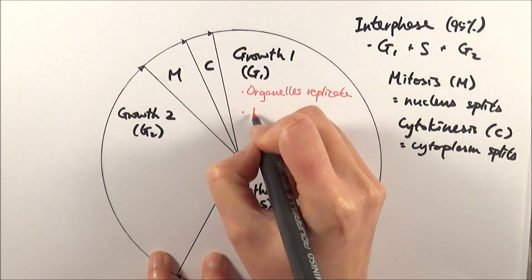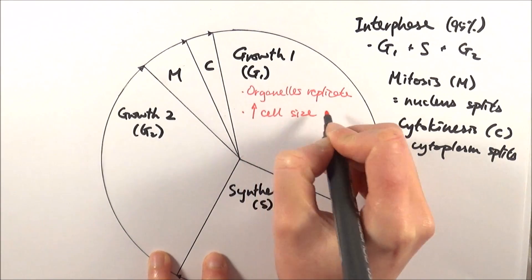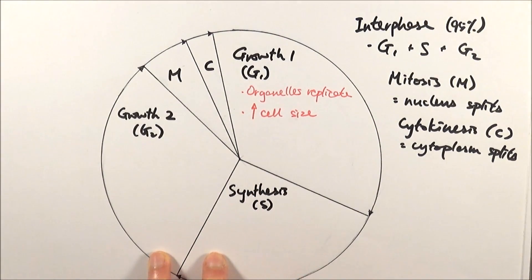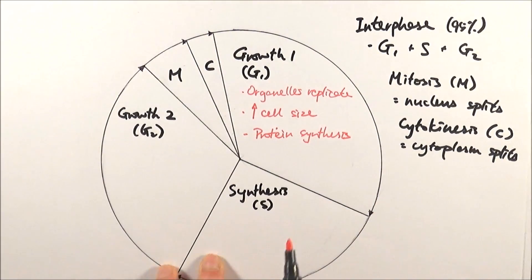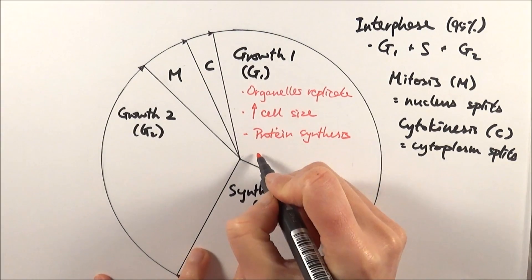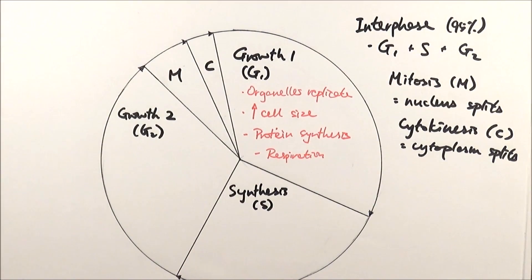Also, the cell grows in size to make sure that your resulting daughter cells will have a normal size, and protein synthesis can happen. This links into organelle replication because organelles contain lots of different types of proteins. Respiration can also occur, providing the energy or ATP required for the cell to do various things, move things around, etc. That is growth one or G1 phase.